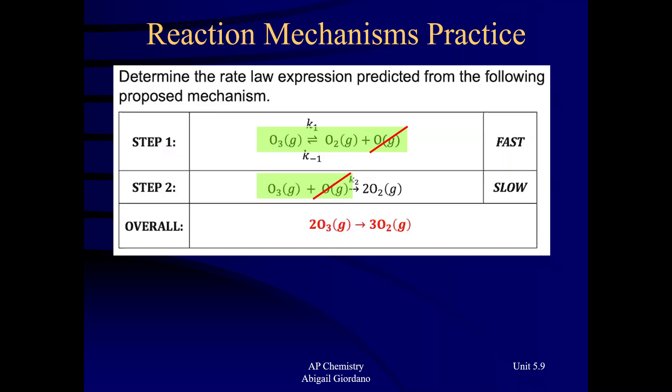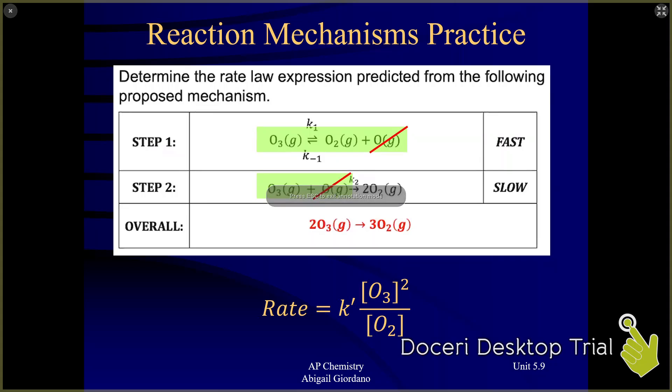And so we're going to write the rate law based on everything that remains. Okay. So I would write rate equals K prime. I can see that ozone, that O3, there's two of them. Now, there's something in this example, though, that's a little different. Let me show you. Okay, so right here, that should not be a surprise to you. There's two ozone molecules on the reactant side, so it gets a power of two.